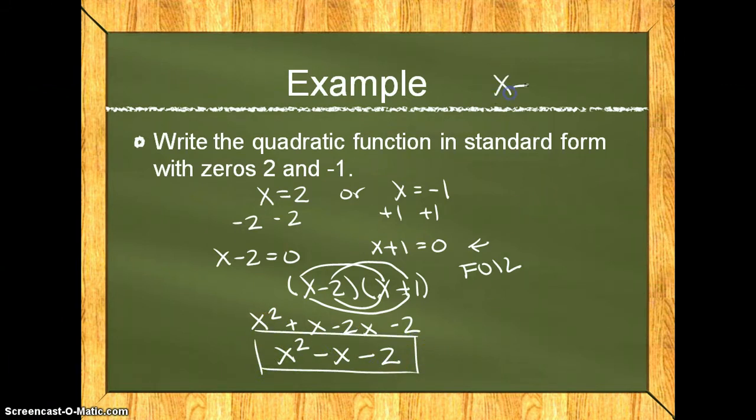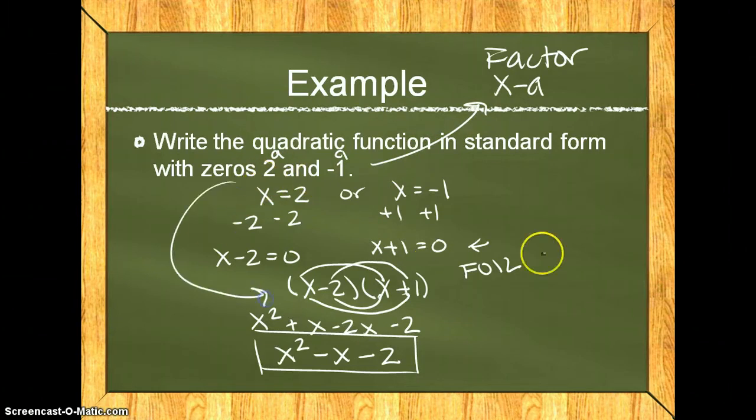Please understand that x minus a is a factor. Therefore, if you know what your a's are, you can plug them in in order to very quickly go from the question to the multiplied form. But if you don't remember to do that, just set your zeros equal to x, and then work your way backwards.